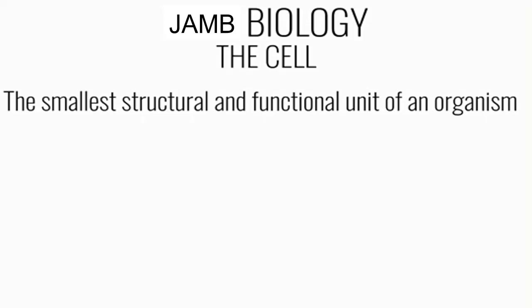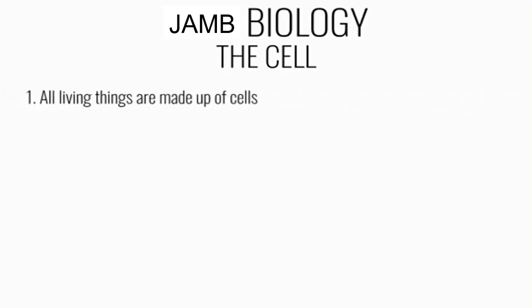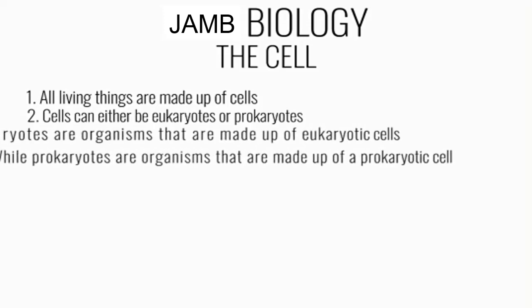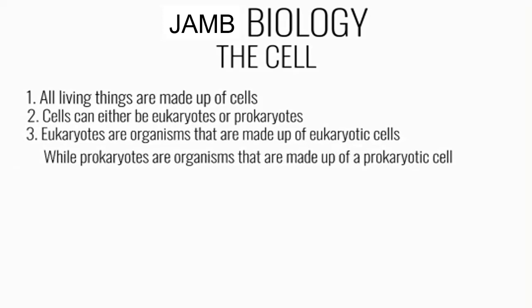So let's take note of these key points. Number one: all living things are made up of cells. Number two: cells can either be eukaryotes or prokaryotes. Eukaryotic cells are complex and they include birds, animals, and plants, whereas prokaryotic cells are the smaller, simpler cells like bacteria.